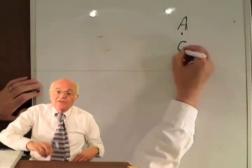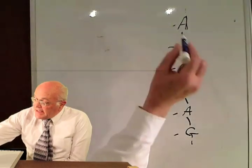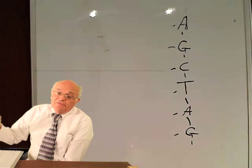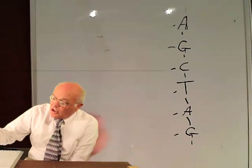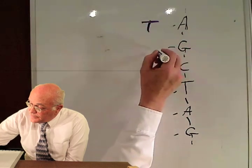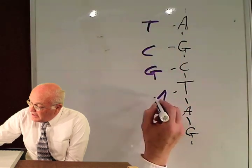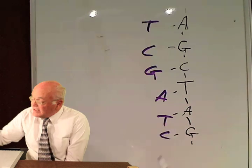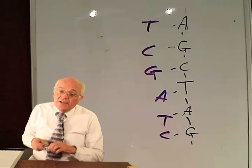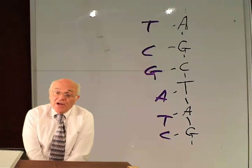For example, you have a strand of DNA with a sequence A-G-C-T-A-G. If a strand comes along that's complementary to this one — which would be T-C-G-A-T-C — then the strand will find its match and hybridize with it.